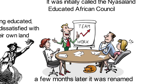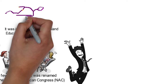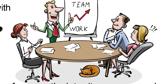Mumba was elected President General at the inaugural meeting of the Congress held in Blantyre in October 1944. As with most members of the Congress, Mumba came from a respected family and had received mission education. The leaders of the Congress included pastors, teachers, civil servants, and businessmen.